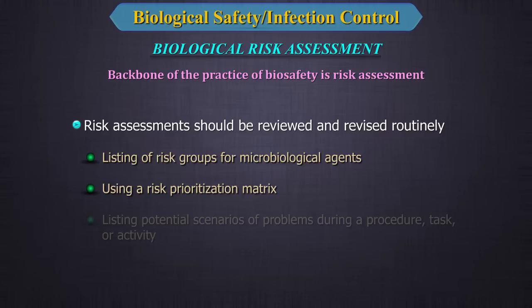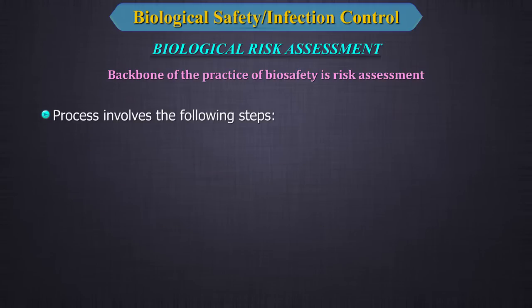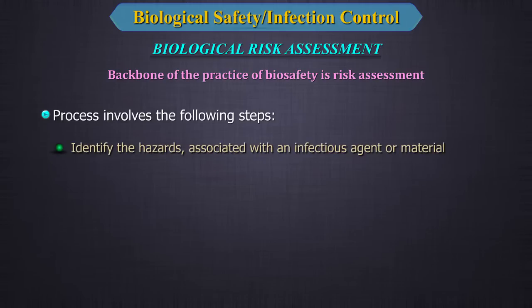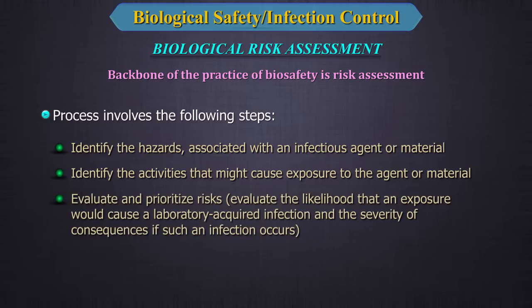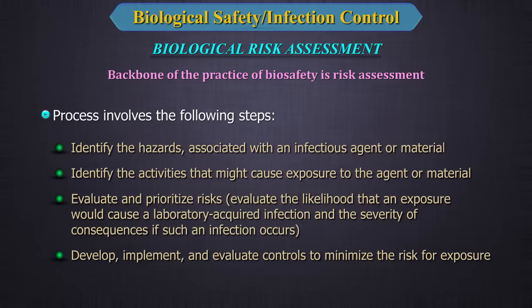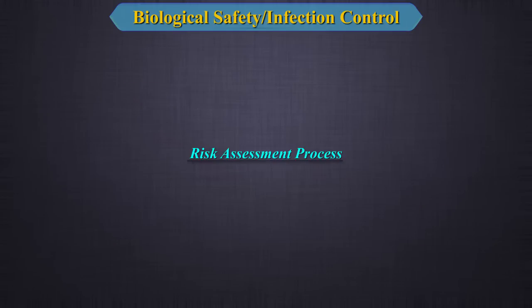Risk assessments should be reviewed and revised routinely, using a risk prioritization matrix and listing of risk groups for microbiological agents. This includes listing potential scenarios of problems during a procedure, task, or activity. The process involves: identifying hazards associated with an infectious agent or material, identifying activities that might cause exposure, and evaluating and prioritizing risks.